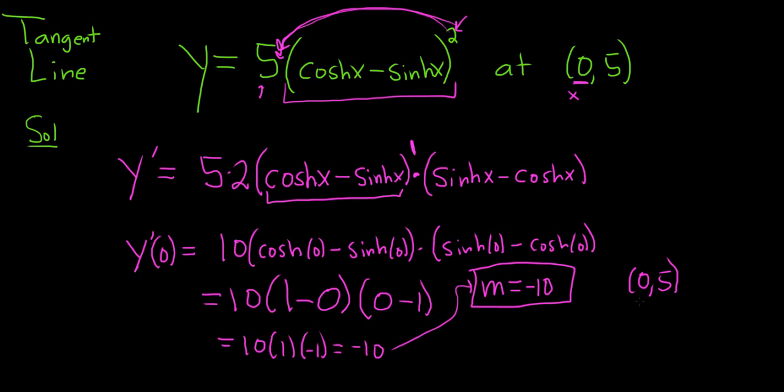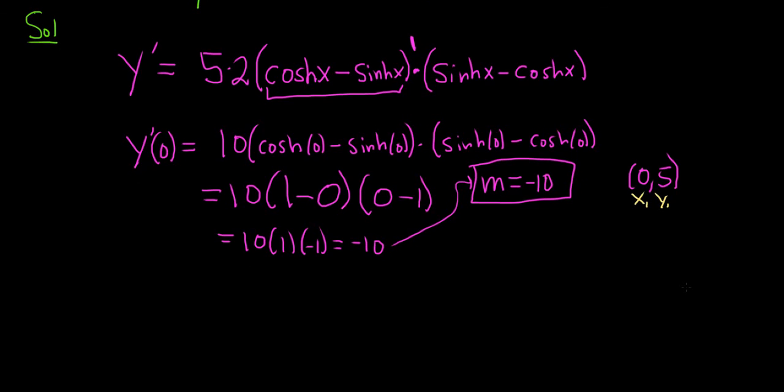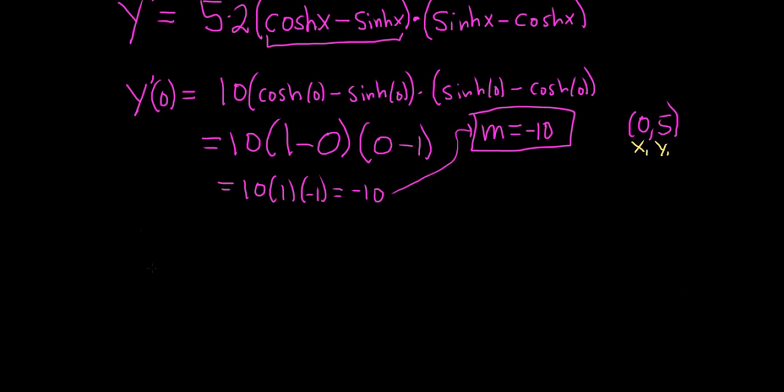So the first component is our x1, the second one is our y1. And now we'll use the point-slope formula. So y minus y1 is equal to m, parentheses, x minus x1.